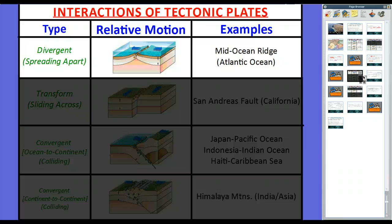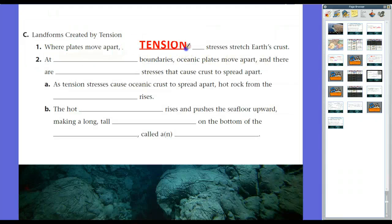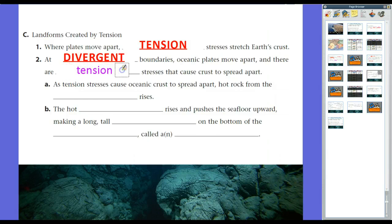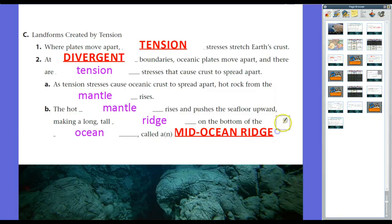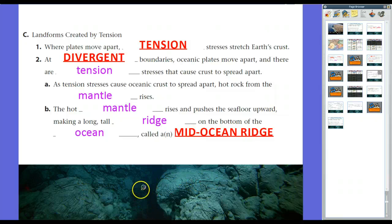At divergent plate boundaries, plates spread apart at mid-ocean ridges. Where plates move apart, tension stresses stretch the Earth's crust — just like silly putty or gum, you pull it apart and it forms tension. At divergent plate boundaries, oceanic plates move apart and tension stresses cause the crust to spread apart. Hot rock from the mantle rises and pushes the seafloor upward, making long, tall ridges along the bottom of the ocean — creating what we call mid-ocean ridges. The photo shown is actually where the Eurasian and North American plates are separating, with rock from the mantle coming up from that gap.